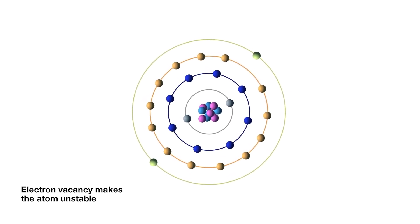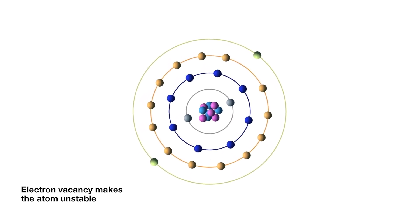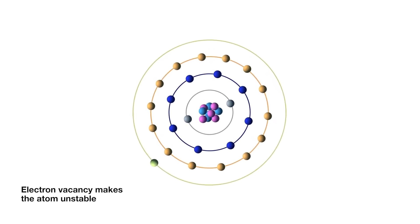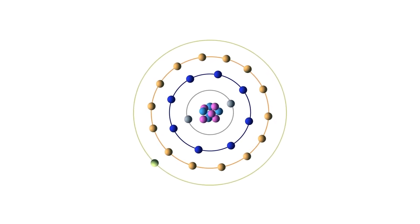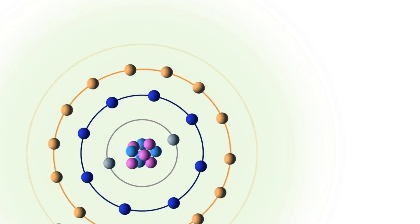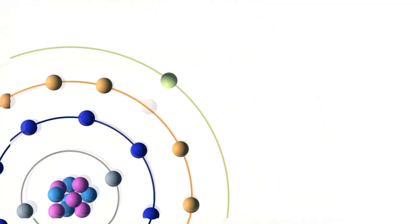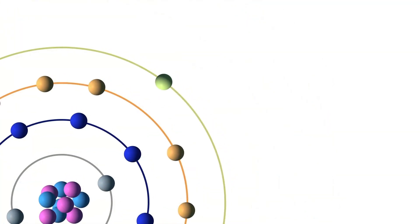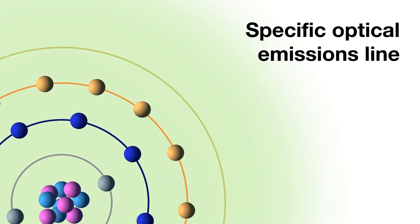To restore stability, electrons from higher orbits further away from the nucleus drop down to fill the vacancy. The excess energy released as the electrons move between the two energy levels or shells is emitted in the form of element-specific light or optical emission. Every element emits a series of spectral lines, corresponding to the different electron transitions between the different energy levels or shells. Each transition produces a specific optical emission line with a fixed wavelength or energy of radiation.